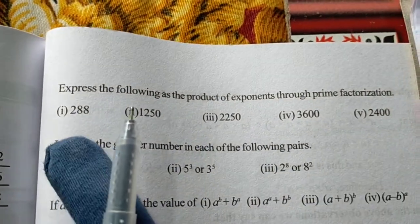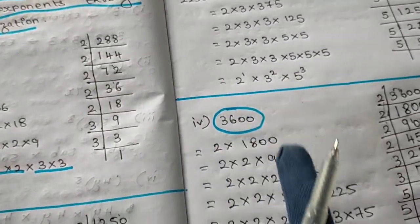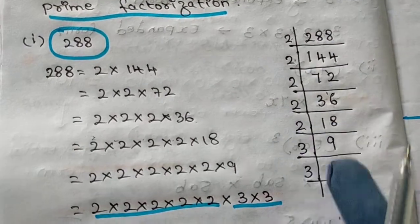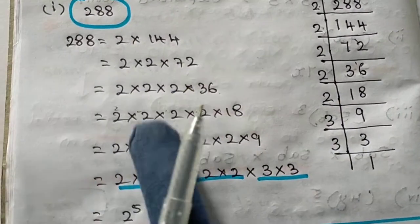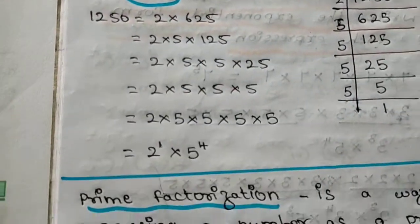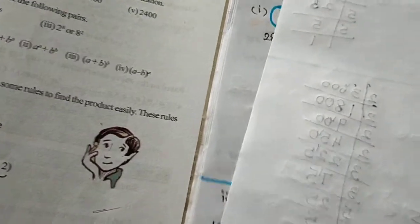There are five sums in total. I have already solved questions 1, 2, 3, and 4. As you can see in my notes, I have done the prime factorization and expressed each number in exponential form. The fifth one I will do right in front of you so it will help you understand. Please take your pen and book and start doing it along with me so that it becomes easy for you.